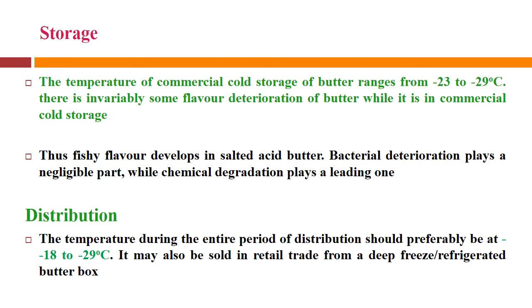The temperature of commercial cold storage of butter ranges from −23 to −29°C. There is invariably some flavor deterioration while in cold storage; fishy flavor can develop in salted butter. Bacterial deterioration plays a negligible part while chemical degradation plays a leading role, as bacterial growth cannot happen at such temperatures but slow chemical oxidation is possible. Temperature during the entire period of distribution should preferably be −18 to −29°C. It may also be sold in retail trade from a deep fridge or refrigerated butter box.